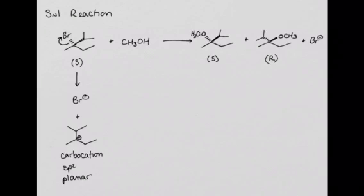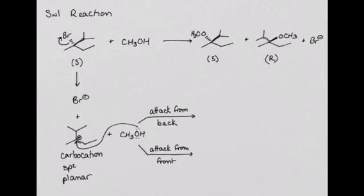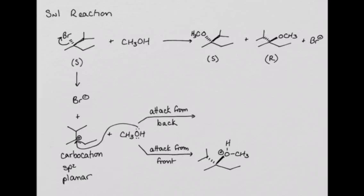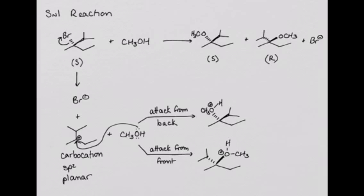Attack of the nucleophile can occur from the front face or the back face of the planar carbocation. If attack occurs from the front face, we will end up with this stereoisomer. If attack of the nucleophile occurs from the back face, we will get this stereoisomer. Because the carbocation is planar, attack from the front or attack from the back is just as likely. Therefore, we end up with an equal amount of each of these stereoisomers.